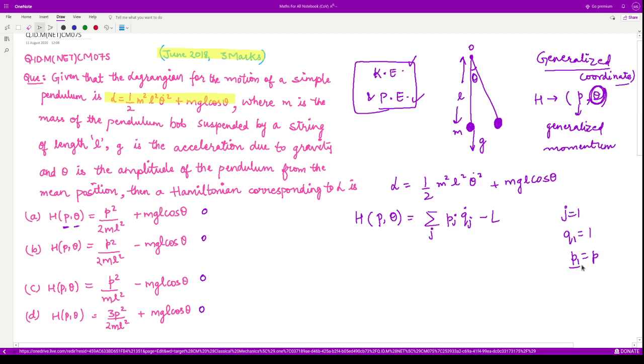So our q_1 is basically theta and p_1 is basically p which is given in question. So the momentum coordinate corresponding to this theta is given to be p. So our h becomes p theta dot minus l.